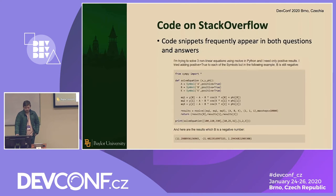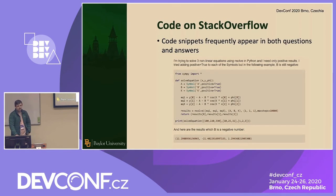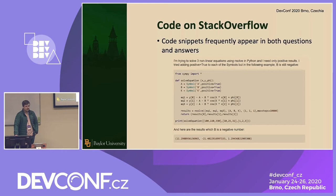I really didn't need this slide in here but I put it in anyway — this is what code looks like on Stack Overflow. It's going to appear in the questions and the answers in these nice little gray boxes which do all the syntax highlighting, and you can see people post code snippets and all sorts of things on there.